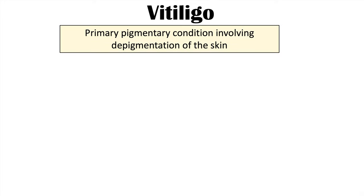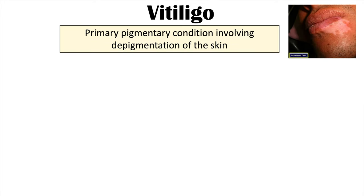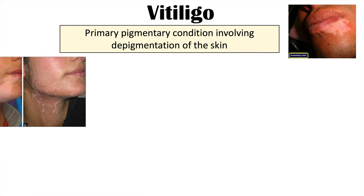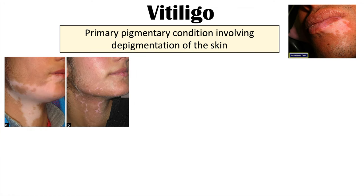Vitiligo is a primary pigmentary condition involving depigmentation of the skin. It is a primary condition, meaning it is a condition in and of itself — there's nothing else causing it. It involves depigmentation, which means removal of pigment from the skin, which we'll discuss more in the pathophysiology section.